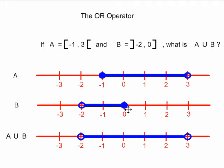Therefore, we can see that any number that is in A or B is in the union of the two sets.